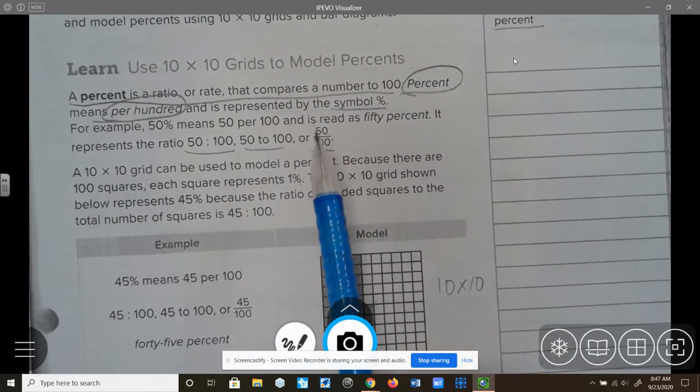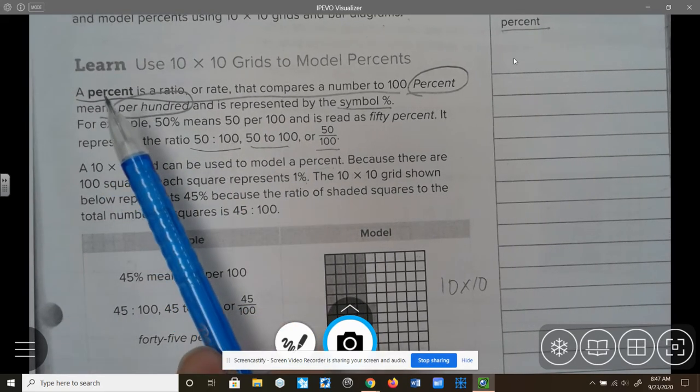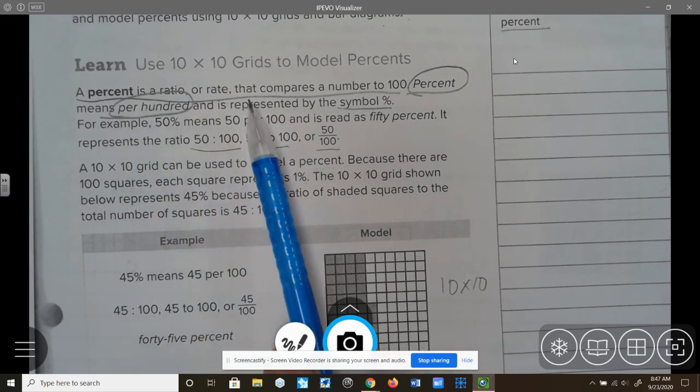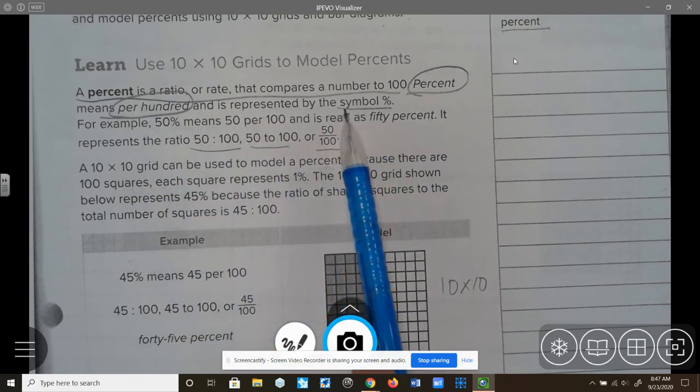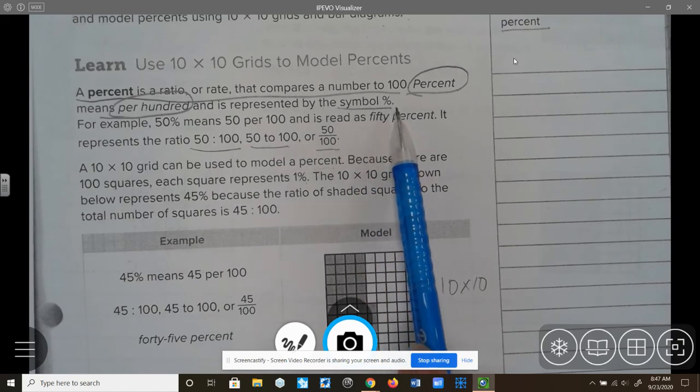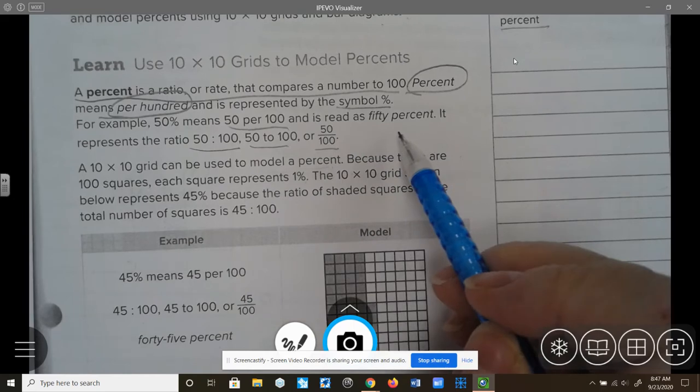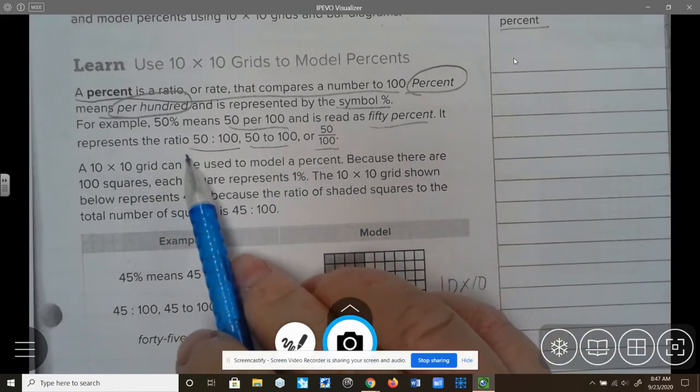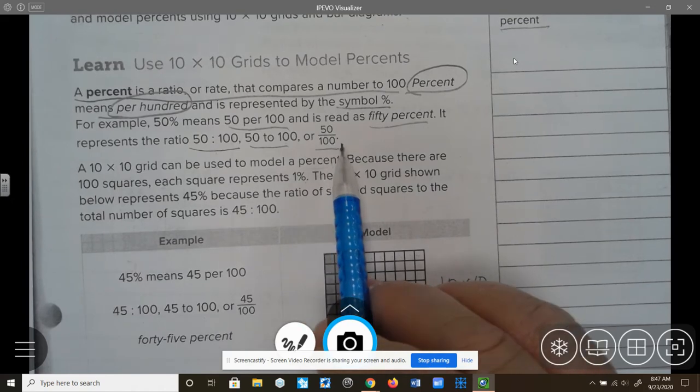I like to always circle and underline important items in my book. A percent is a ratio or a rate that compares a number to 100. Percent means per 100 and is represented by the symbol. For example, 50% means 50 per 100 and is read 50%. It is also represented as 50 to 100, 50 to 100, and 50 over 100.